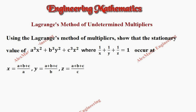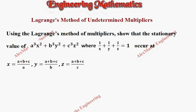Hi students, this is Alex here. In this video, we are going to use Lagrange's method of multipliers to show that the stationary values of the given function a³x² + b³y² + c³z², with the condition 1/x + 1/y + 1/z = 1, occur at x = (a+b+c)/a, y = (a+b+c)/b, and z = (a+b+c)/c.